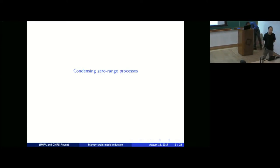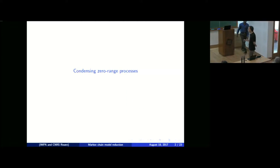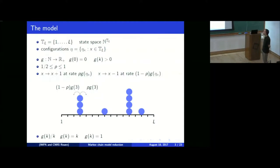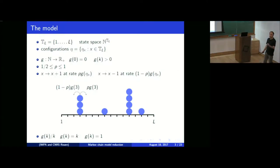The model I want to present is a zero-range process. Let me describe it. You have a finite torus with L points, which I'm representing by T_L, and you have particles evolving in this torus. There is no restriction on the number of particles at each site. I will represent the configurations by eta, so eta_x will represent the number of particles at site x.